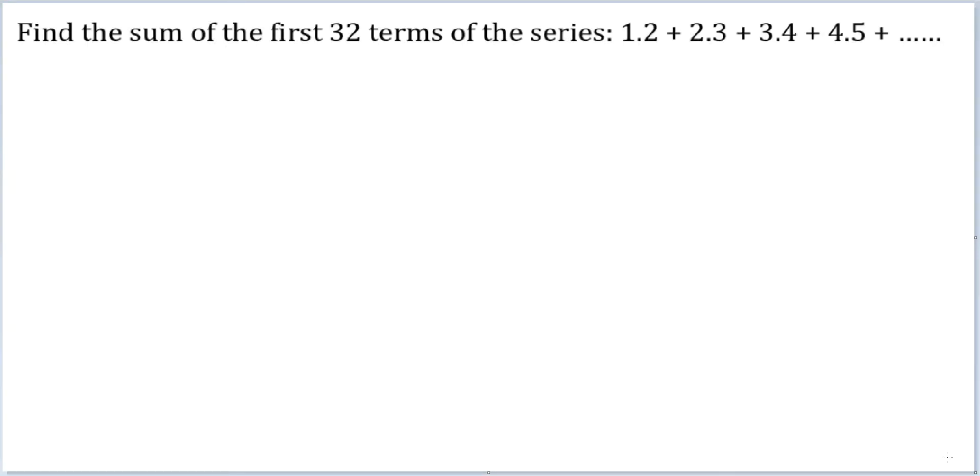Let's look at this question. Find the sum of the first 32 terms of the series: 1.2, 2.3, 3.4, 4.5. Don't think of them as decimal places. These are multiplications.